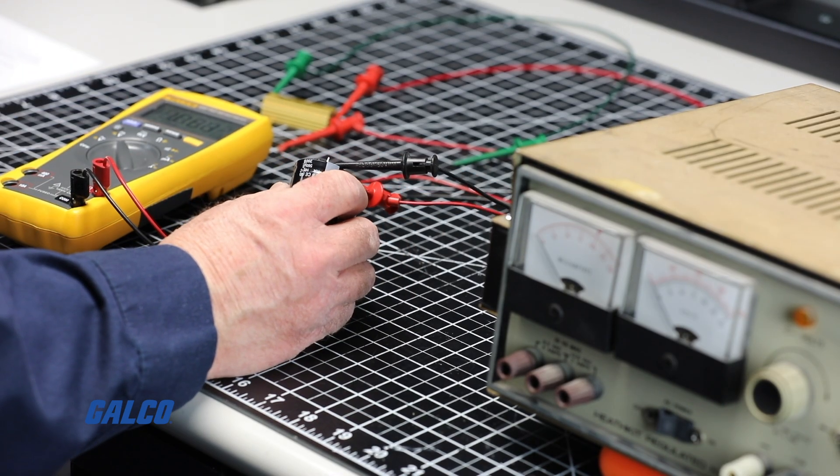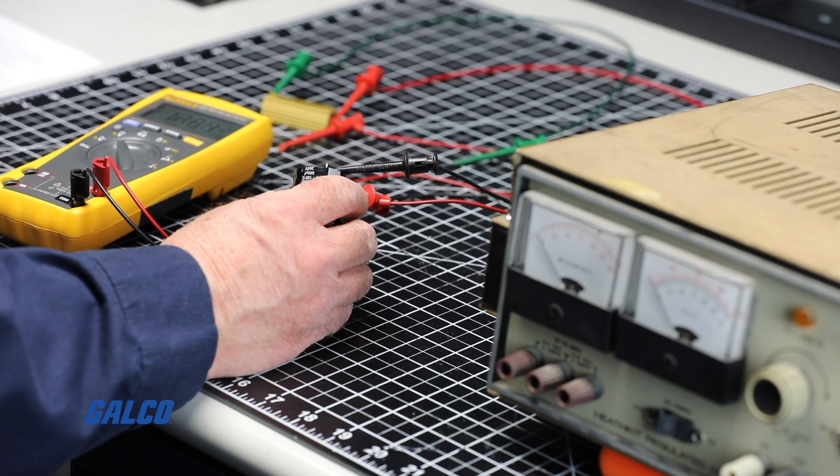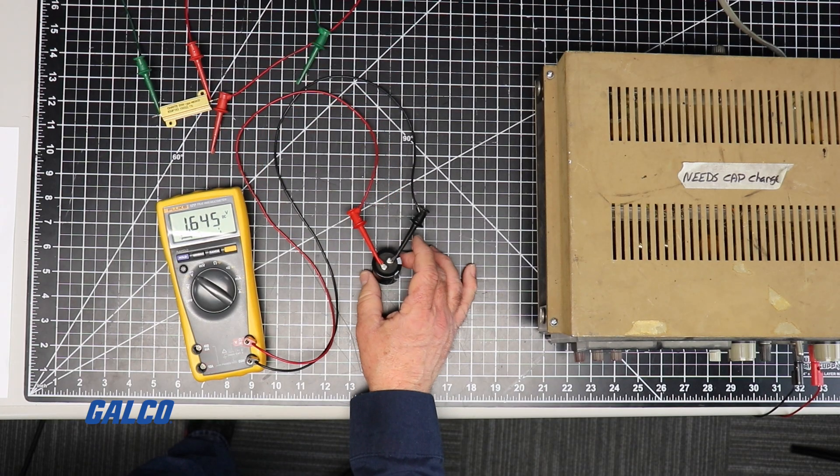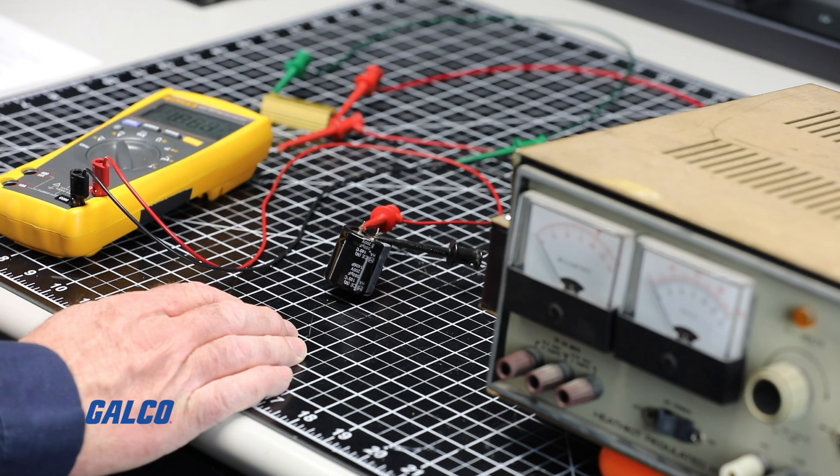This is why resistors are used in power supplies and VFDs to not only balance voltage, but to help bleed it off continuously after the line power is removed.